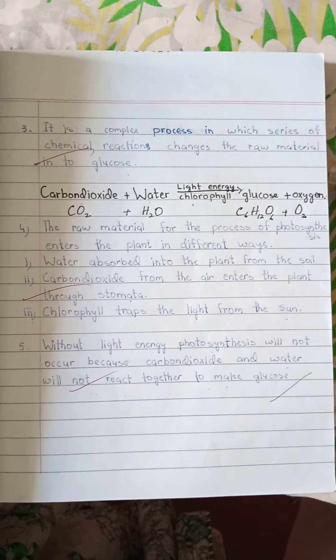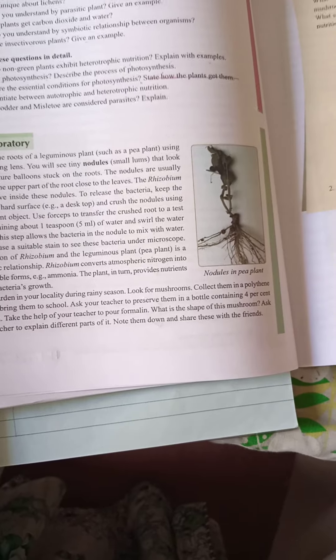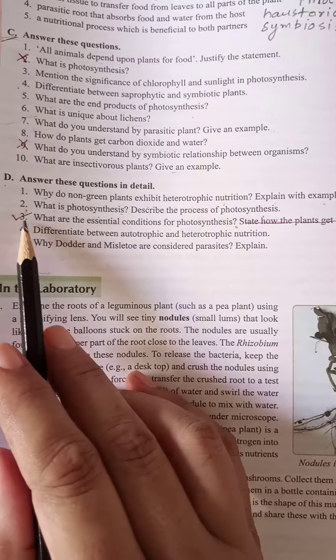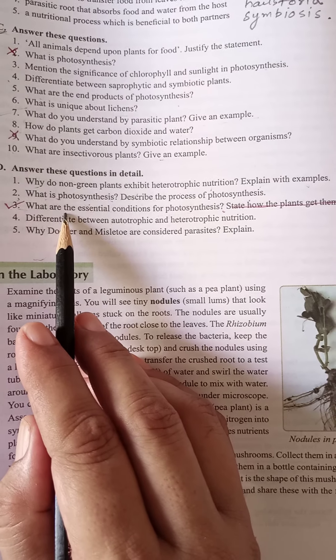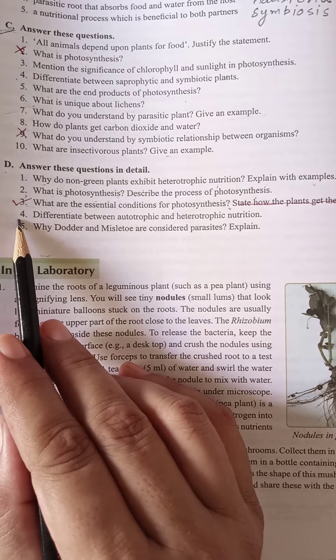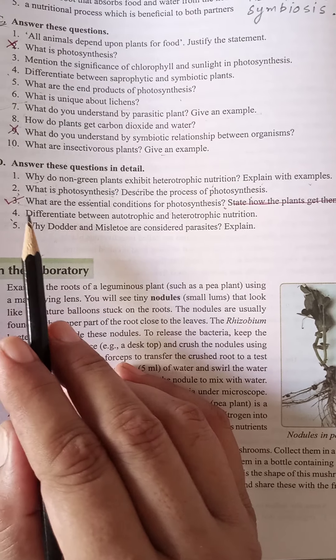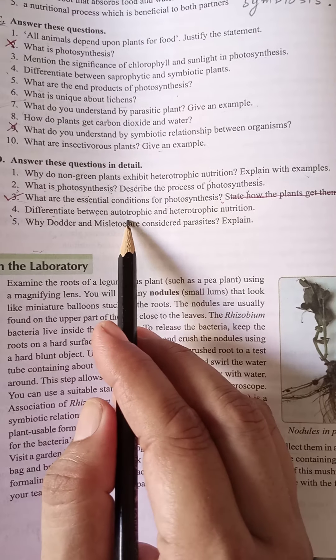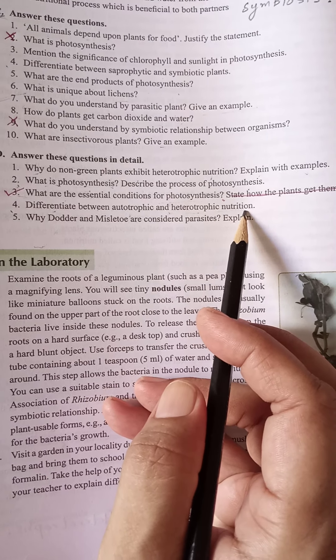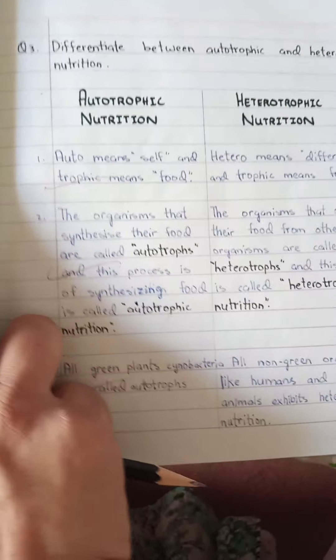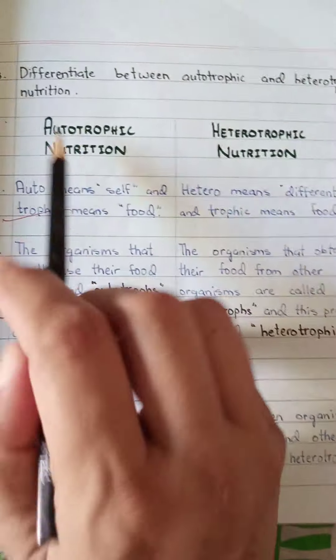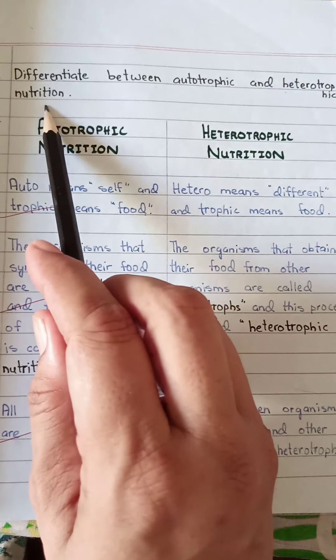Question number 3 we have already done in our short questions, so come to question number 4: Differentiate between autotrophic and heterotrophic nutrition. Copy down the question: differentiate between autotrophic and heterotrophic nutrition.